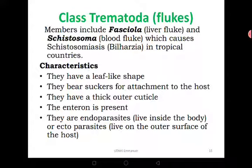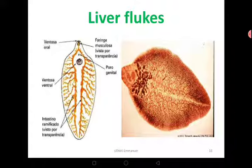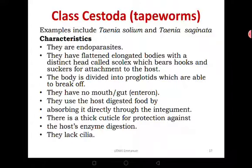Some may be ectoparasites that live outside or on the surface of the body. Their bodies look like leaves, and they have mouth parts well adapted for attachment to the host. The liver flukes have a color which resembles their host — the liver. When you look at the liver and the liver flukes they almost look the same, so you have to be very keen. In most cases they attack sheep and cows, and if you're not careful you might end up cooking that liver with liver flukes inside.